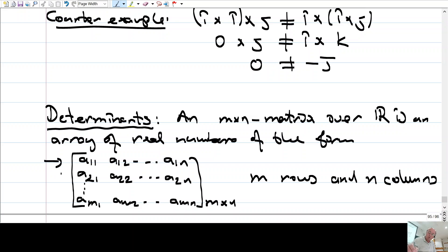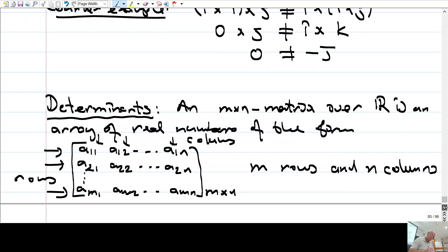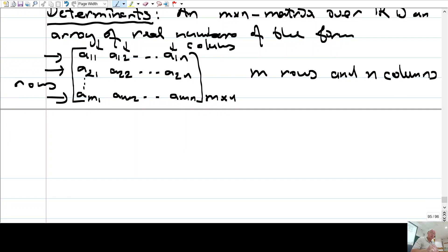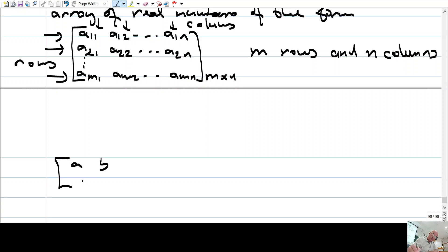Okay. These are the rows and these are columns. So, in this course we will need 2 by 2 or 3 by 3 matrices at most. 2 by 2 matrices are like this. And a 3 by 3 matrix is this form, h i, 3 by 3.